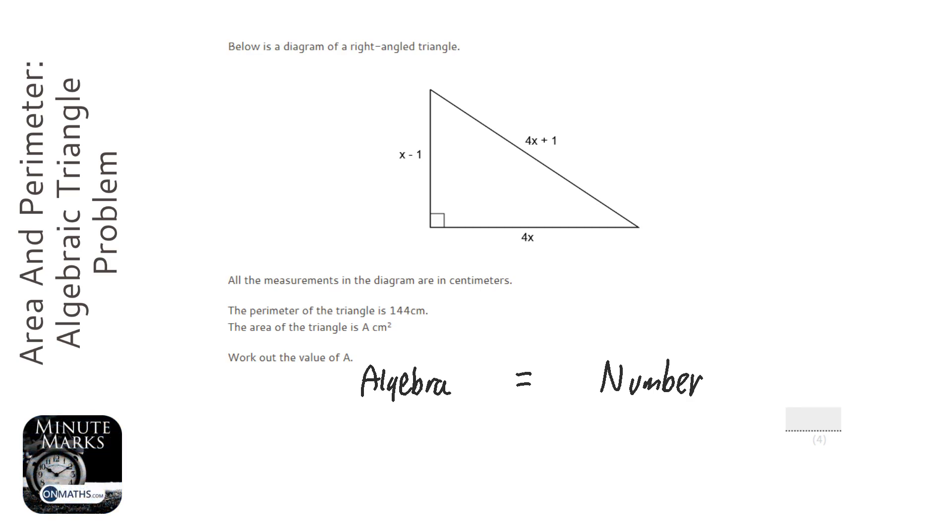So the perimeter is the distance around the shape. If you pick a point, I'm going to pick here and just walk around the shape, it's going to be x minus 1 there.